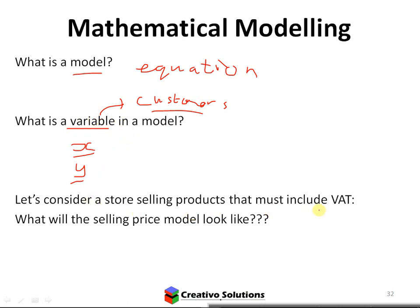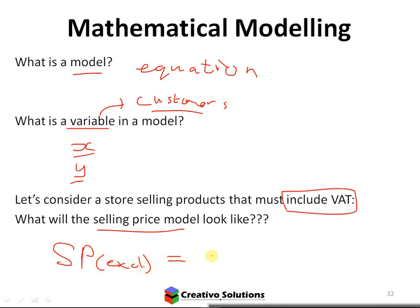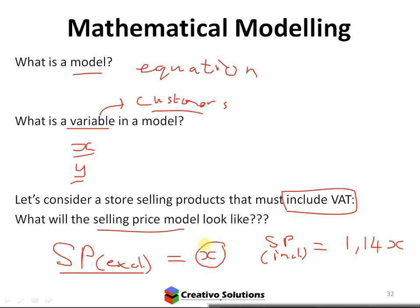If I consider a store and they're selling products including VAT — you've seen VAT before in accounts — what will the selling price model look like? Selling price excluding VAT would be our X. So if I want selling price including VAT, that would be 1.14X. I'm adding 14% to the excluding VAT amount. So a variable here is a placeholder — it's a placeholder for something.